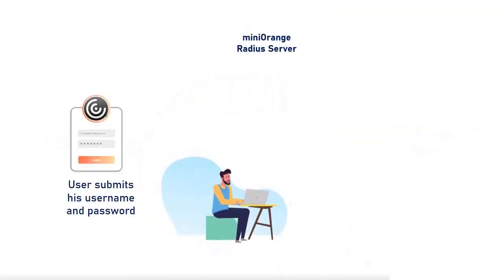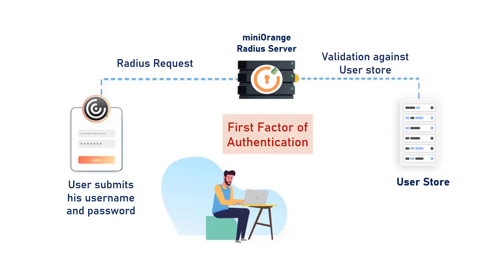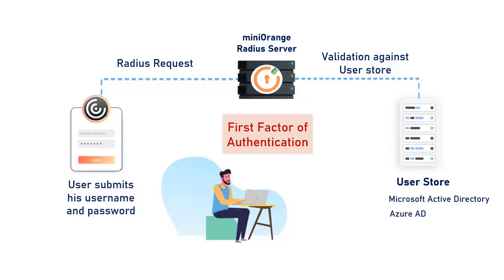The user submits his username and password, which is accepted by the Mini Orange Radius server as a Radius request. The user can be validated against any user directory like Microsoft Active Directory, Azure AD, OpenLDAP, or you can keep users in the Mini Orange user directory as well.